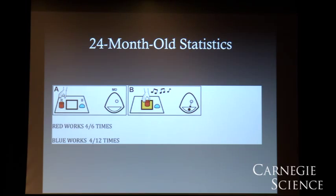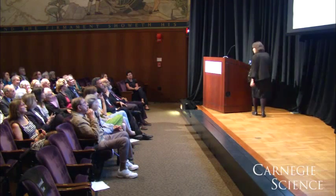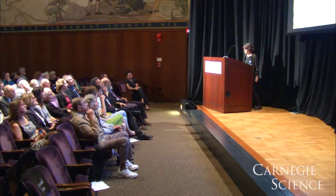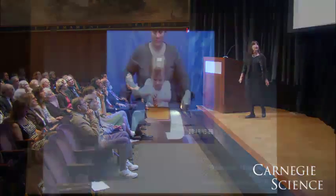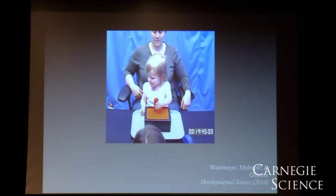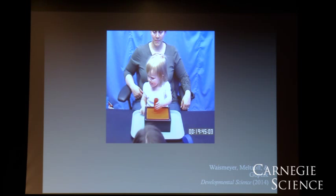We did this with 24-month-olds — little babies just starting to walk and talk. What we discovered was that the 24-month-olds would actually choose the red block — the block that was more effective based on its probabilities — even though the absolute numbers were the same. The 24-month-olds already seem sensitive to the fact that a higher conditional probability of effect given the cause means it's a stronger cause, and if you want the machine to work you should choose that cause. So they're already essentially inferring causality from correlation — one of the most important and fundamental things in doing science.